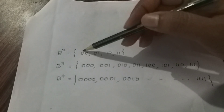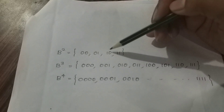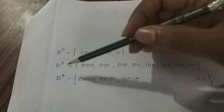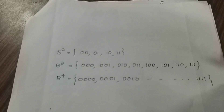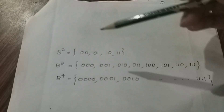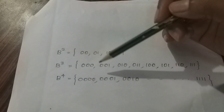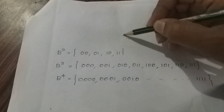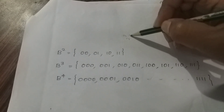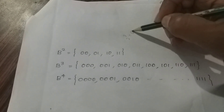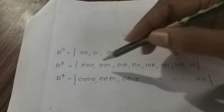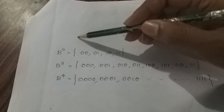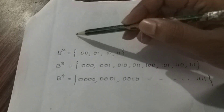The elements of b² are: 00, 01, 10, 11 — that is 4 elements, which is 2 raised to 2. If you want to find b³, there are three positions, so there are 8 elements, which is 2 cubed. In general, 2 raised to N gives the number of elements.